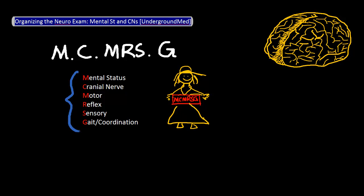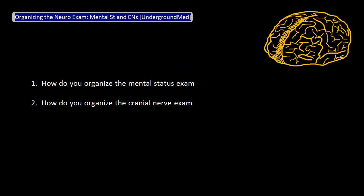In this video, I will go into more detail about how to organize the first two pieces of the exam: the mental status and the cranial nerve exams. In the next video, I'll go into more details about the remaining four pieces of the exam.